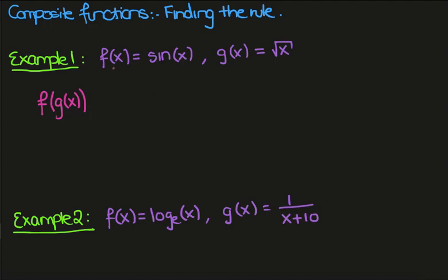So what we're going to simply do is replace every x in this definition with g of x. So I'm going to have sine of g of x. But now we know that g of x is the square root of x and so we have that f of g of x is sine of square root of x.